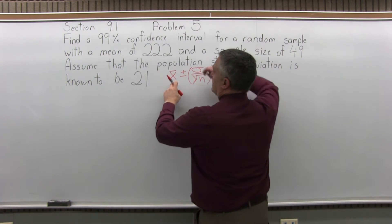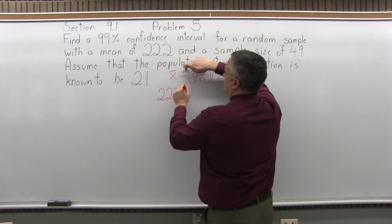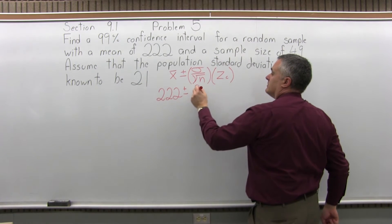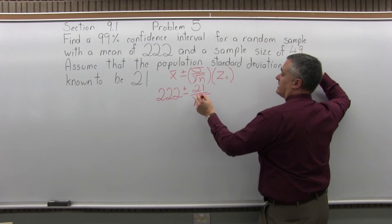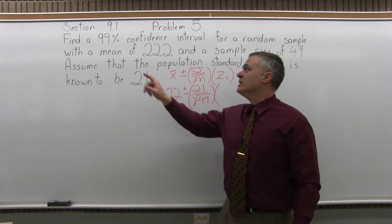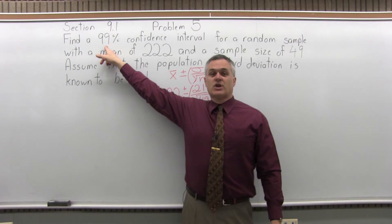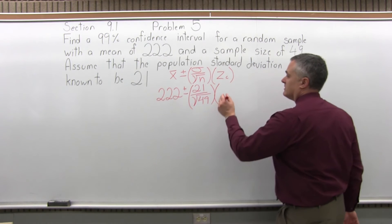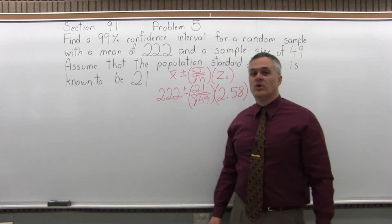So now, as you fill it in: x-bar, the sample mean, is 222 — that's given. Plus or minus sigma, the standard deviation, which is 21, over square root of n. n is the size of the sample, so it's 49. Times z sub c, the confidence coefficient. This problem wants a confidence level of 99%, and from the chart, 99% has a confidence coefficient of 2.58.